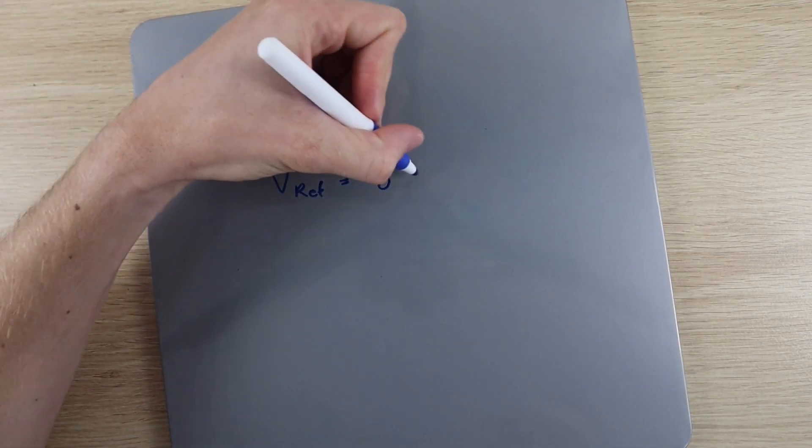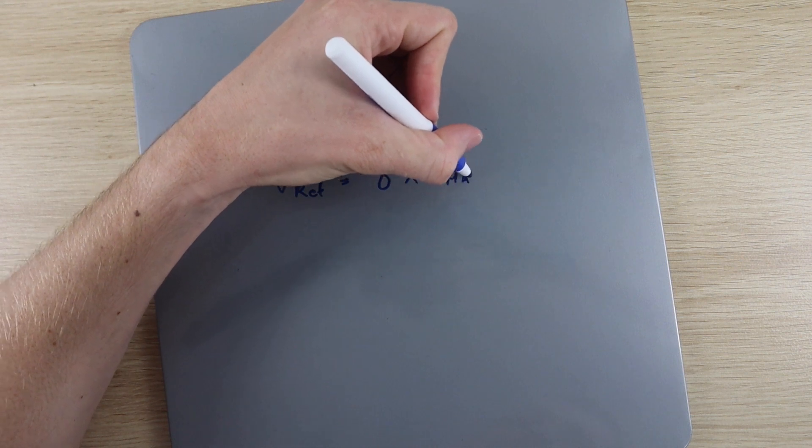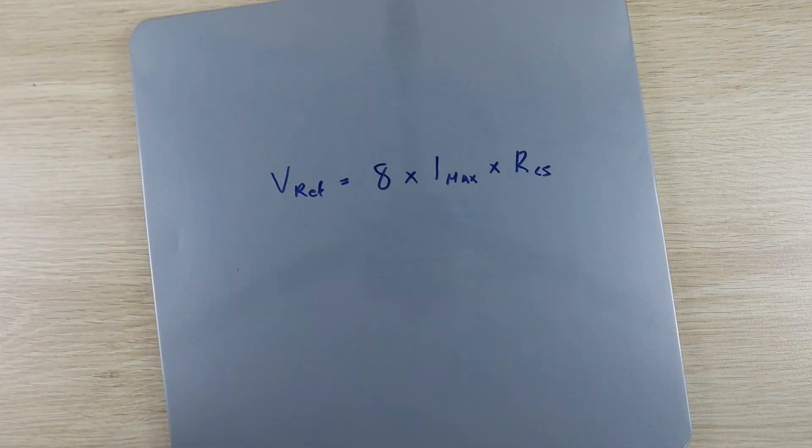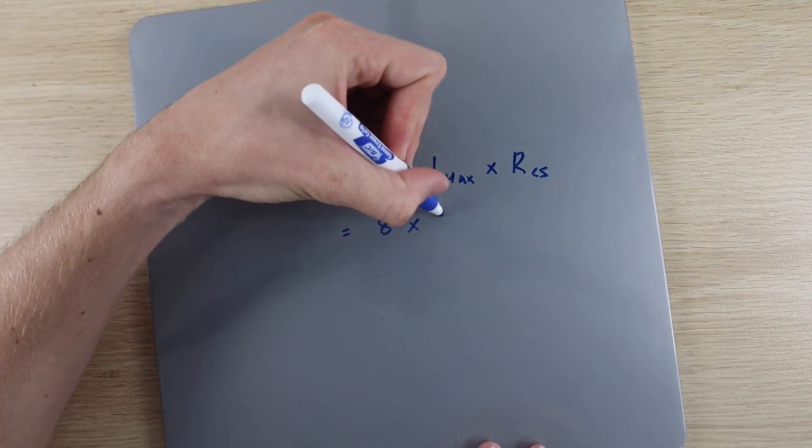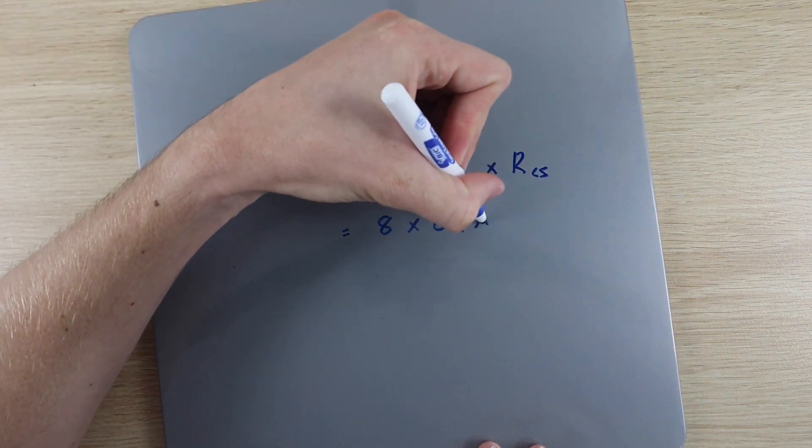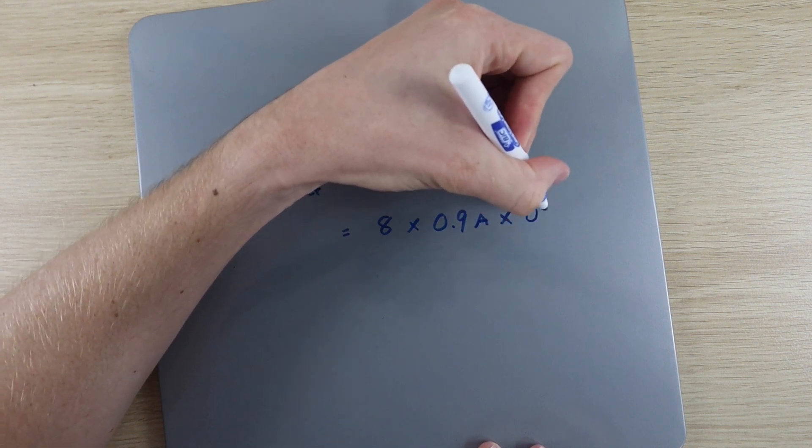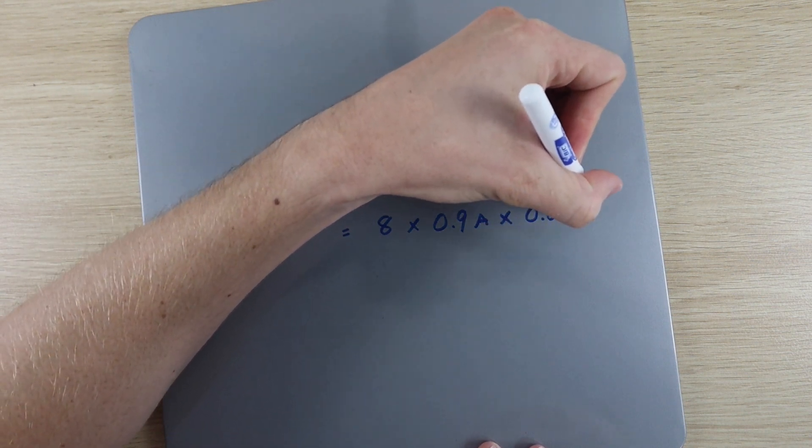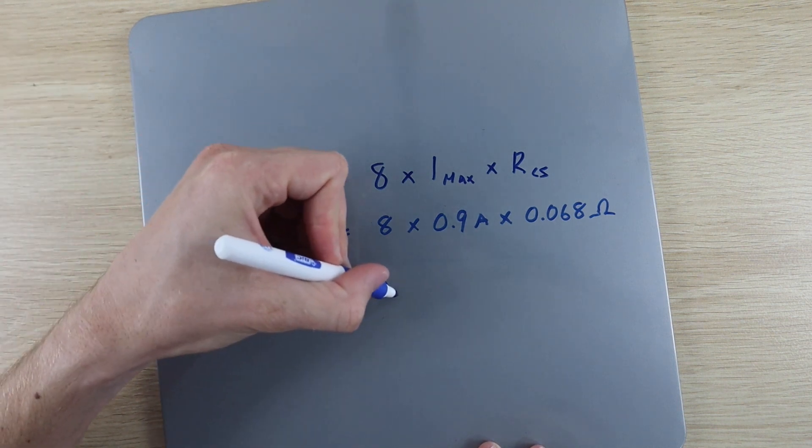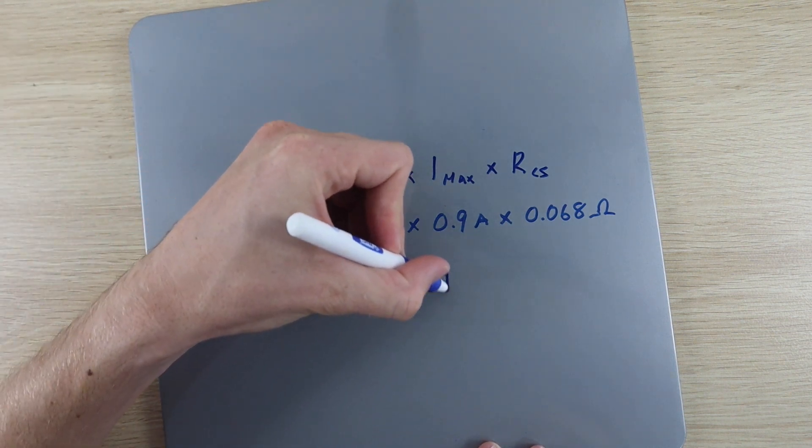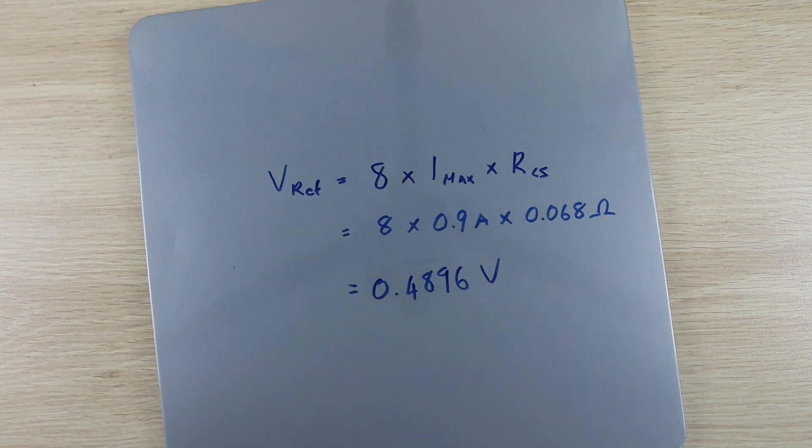Then calculate your reference voltage using the following formula. Your reference voltage is calculated by multiplying your motor's maximum current by 8 and then by your driver's current sensing resistance. Your motor's maximum current can be found on the datasheet. Ours is 0.9 amps. The driver's current sensing resistance is 0.068 ohms for most of the newer drivers. Using this formula, we calculate that our reference voltage should be about 0.49 volts.